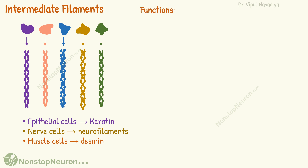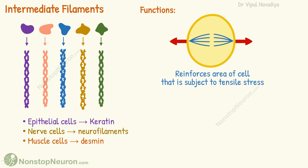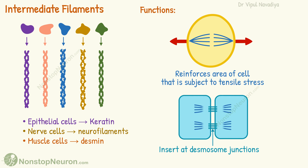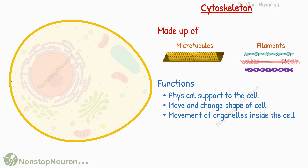Talking about their functions, intermediate filaments radiate from areas of the cell that are subject to tensile stress, thus reinforcing such areas against it. In epithelial cells, they insert at the desmosomal junctions that attach neighboring cells to one another.